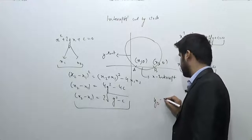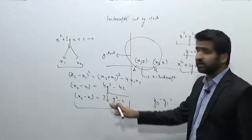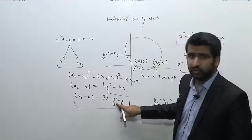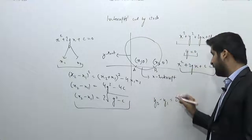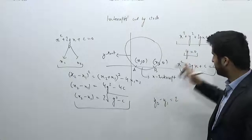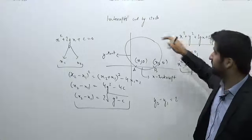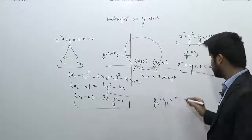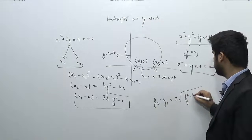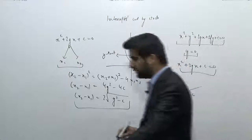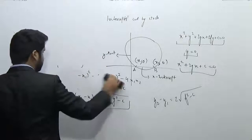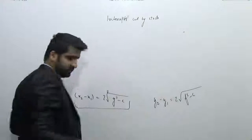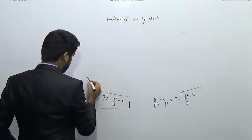Similarly, the y-intercept can be easily deduced. In the case of the x-intercept we are getting g² here, so in the case of the y-intercept if we do the same procedure — putting x = 0, because the two points on the y-axis will have their x-coordinate equal to 0 — this comes out to be 2√(f² - c). So these are the two values: x-intercept = 2√(g² - c) and y-intercept = 2√(f² - c), cut by the circle.